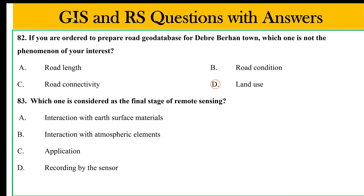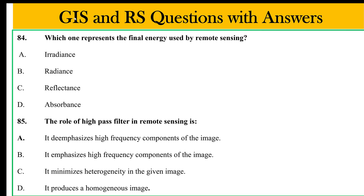We have to do some analysis and deal with the data. The application is recording by the sensor. The application involves the energy source to interact, record by the sensor, interpretation and analysis. The application image represents the final energy used by the remote sensing.